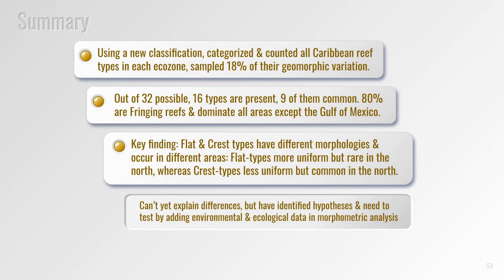To wrap up: we've used a new classification to categorize and count all surface reefs in the Caribbean and measured 18% of them for geomorphic variation. We found 16 reef types in total, 9 of which are fairly common; 80% are fringing reefs which dominate all areas, and 20% are barrier reefs, farrows and atolls. A key finding is that flat- and crest-type reefs have different morphologies, occur in different areas, and seem to have different internal structures. We've hypothesised these differences may be related to a northern increase in hurricane frequency, a reduction in the annual temperature range, or both. To test these preliminary explanations we need to introduce environmental and ecological data into the analysis — and that will be our next step.